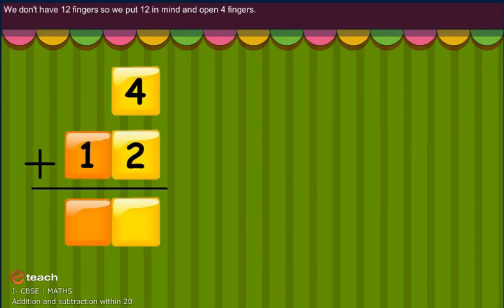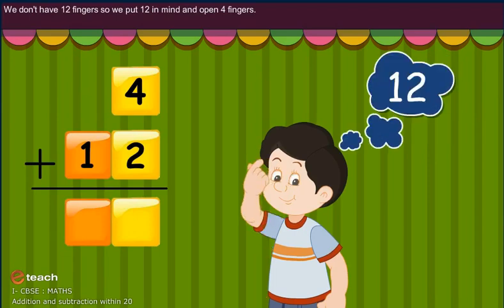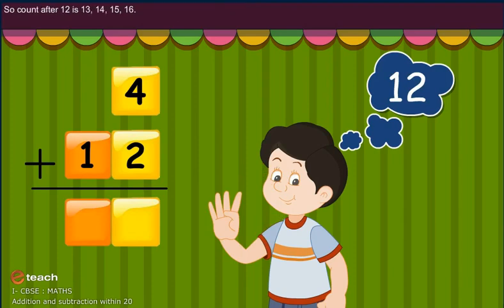We don't have 12 fingers, so we put 12 in mind and open 4 fingers. Count after 12: 13, 14, 15, 16.